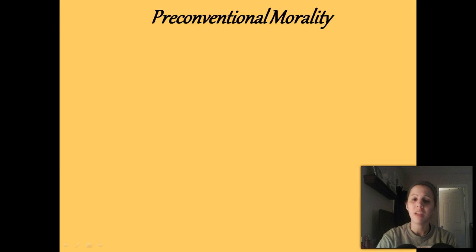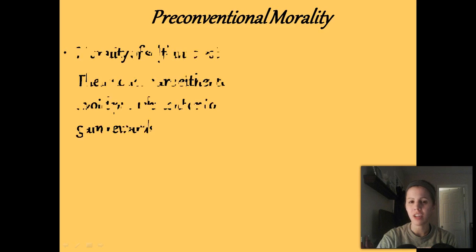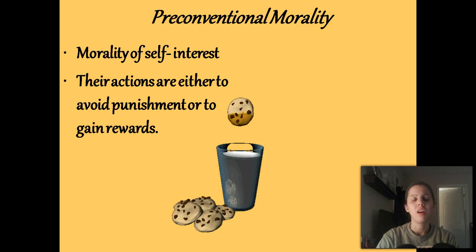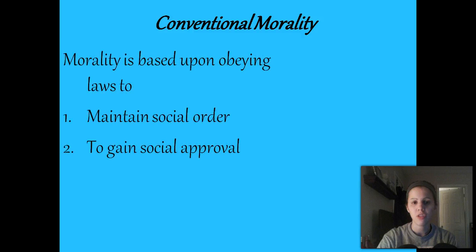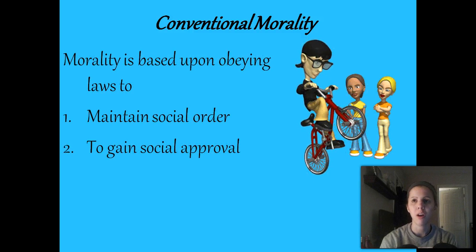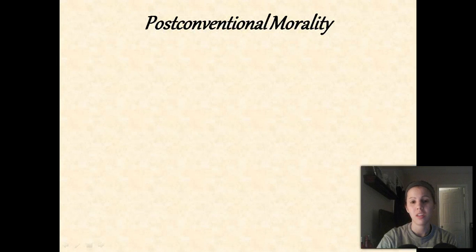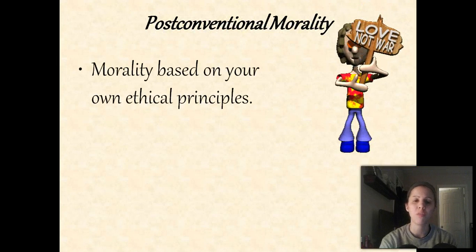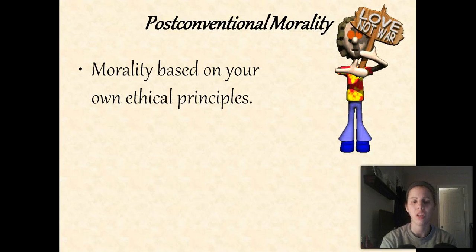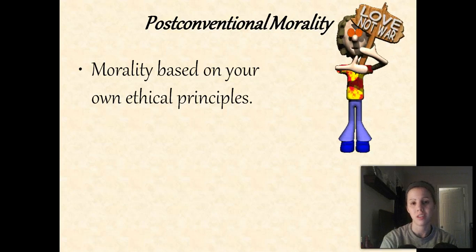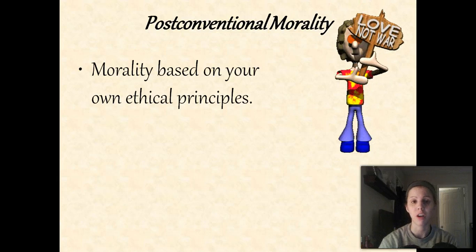Quick recap: the pre-conventional stage is usually before age nine, though we still use it after — driven by egocentrism, avoiding punishment, or gaining rewards. The conventional stage is all about obeying the law, maintaining social order, and gaining social approval or avoiding social disapproval. The post-conventional stage, which not everybody reaches, is morality based on your own principles — you're willing to go against what society says is right or wrong because of what you personally believe is right or wrong.